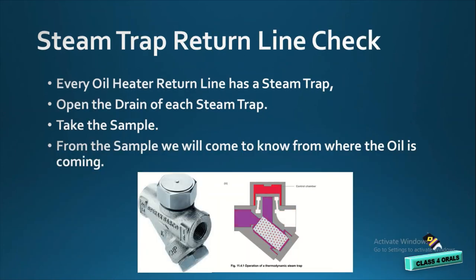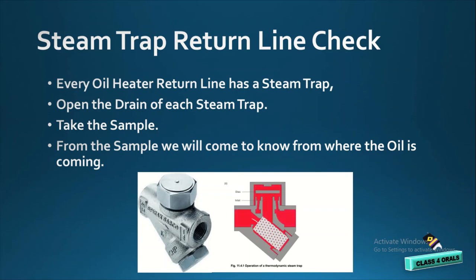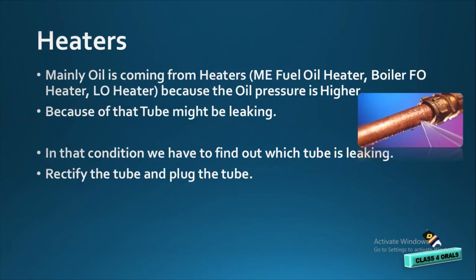Now, we have to check the steam trap return line. Every oil heater return line is having a steam trap. We have to open the drain of each steam trap, take the sample from that. From that sample, we will come to know from where the oil is coming into the hot well.